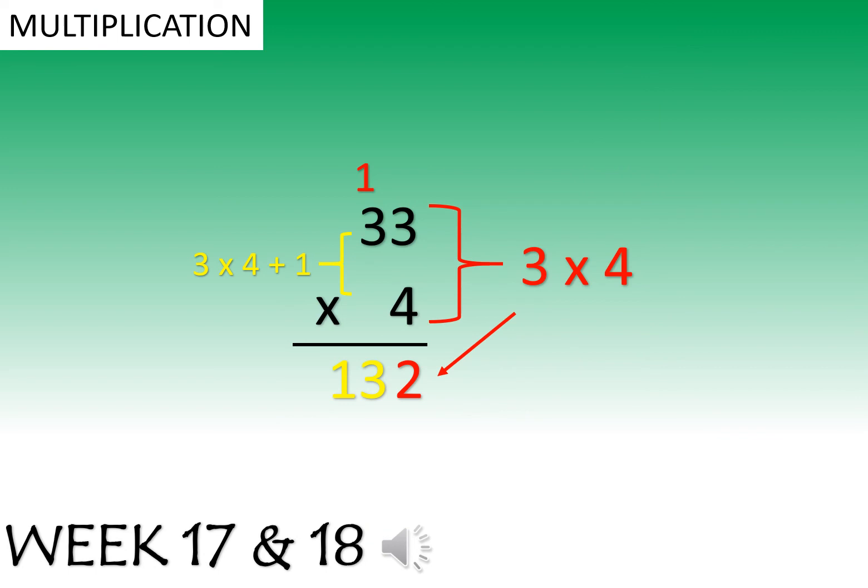Multiplication for the grade 3s. 3 times 4 is 12. Write the 2 and carry the 1. 3 times 4 is 12 plus the 1 that you carried is 13.